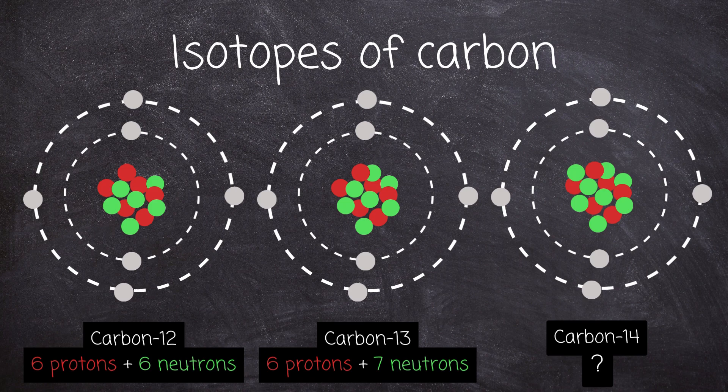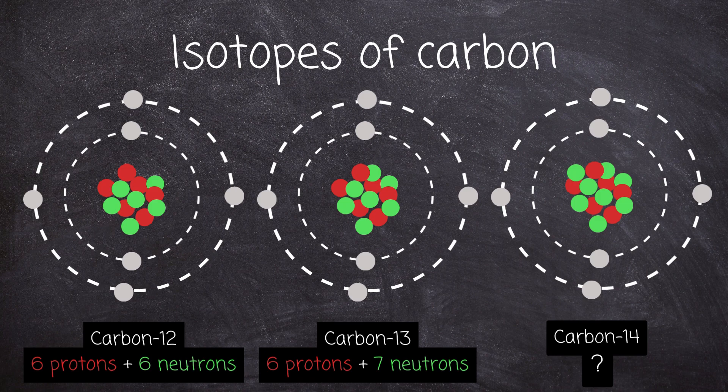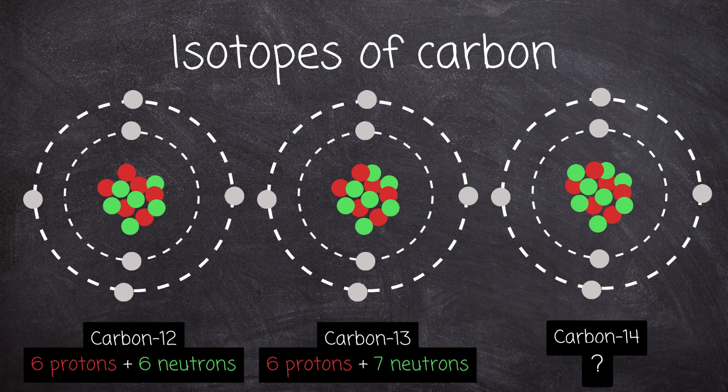Carbon-12 has 12 nucleons, six protons and six neutrons. Carbon-13 has 13 nucleons, six protons and seven neutrons. And carbon-14 has 14 nucleons. So how many protons and neutrons does carbon-14 have?